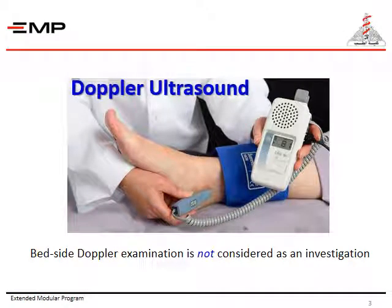If you suspect that your patient is having a lesion along the arterial tree causing occlusion or stenosis, vascular imaging can give you more information about the site, the extent, and the nature of the lesion. Doppler ultrasound, used to detect blood flow within the vessel, as shown in the picture, is considered a bedside procedure and not an investigation.